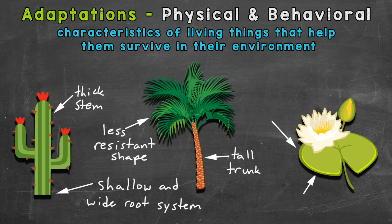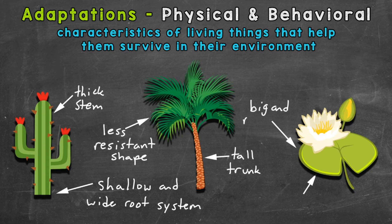Lastly, we're going to take a look at water lilies. Just like the other plants, there are different types of water lilies with different types of adaptations. Water lilies have big leaves that float on the water's surface — these are called lily pads. These big, round leaves are able to collect plenty of sunlight. Some water lilies also have thorns on the underside of the lily pad for protection from predators. Most of those were examples of physical adaptations.